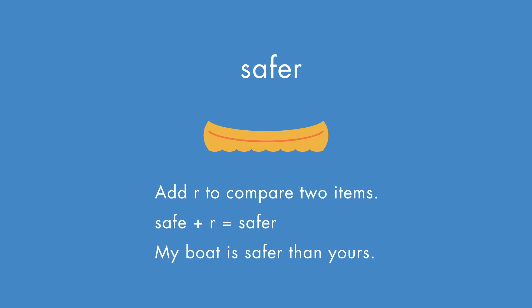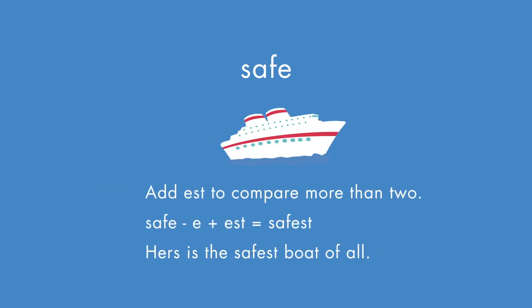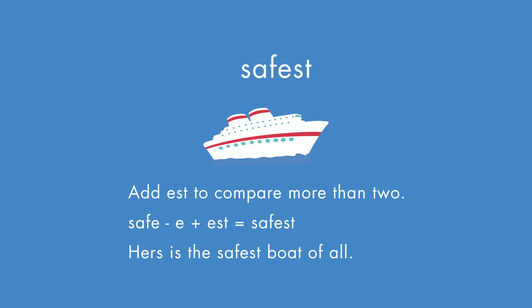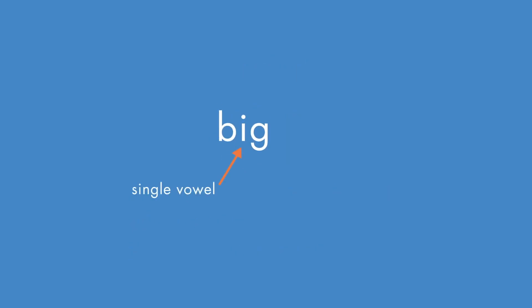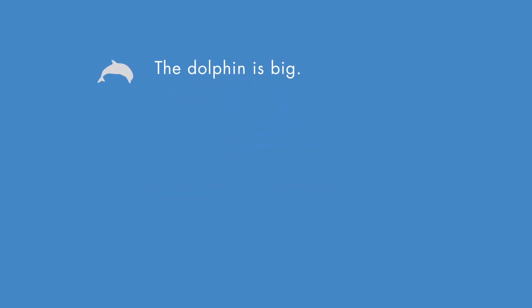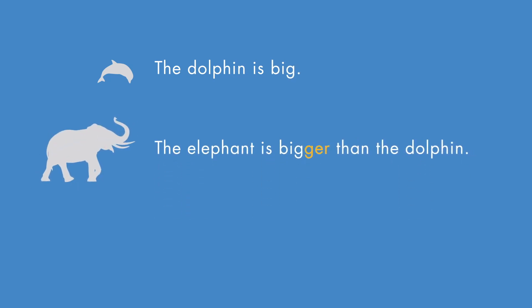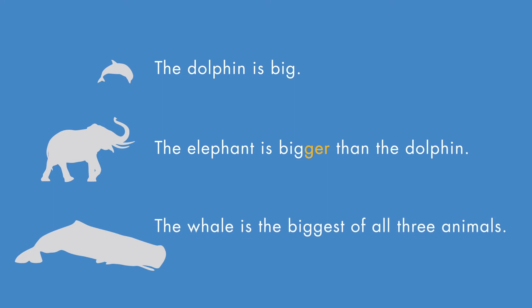If an adjective ends with E, just add R or ST when comparing two or more things. If an adjective ends with a single vowel and consonant, double the consonant first. The dolphin is big. The elephant is bigger than the dolphin. The whale is the biggest of all three animals.